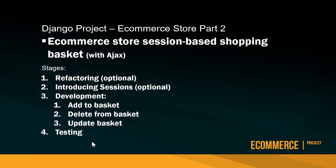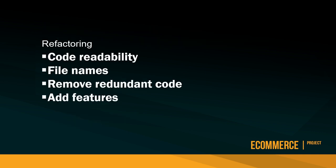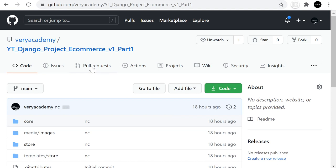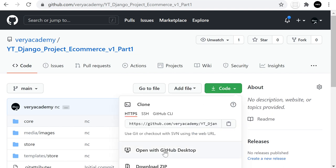Welcome to stage one: refactoring. This is optional — you can skip it. I'll download the Django code from the previous tutorial, run the project, make small changes for code reliability, review file names, remove redundant code, add small features, and prepare the code for the new sessions step. You can find the code via the link in the previous tutorial, on GitHub by searching 'Very Academy', or via Google.